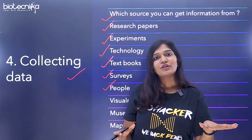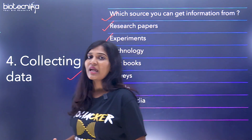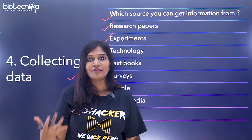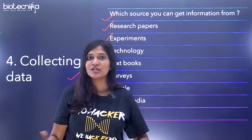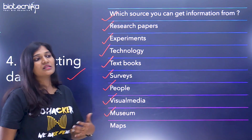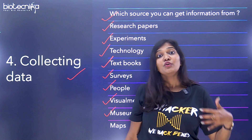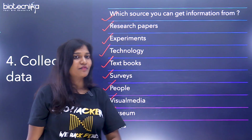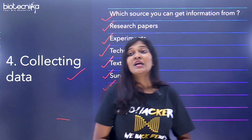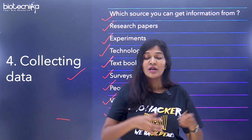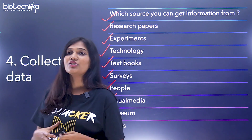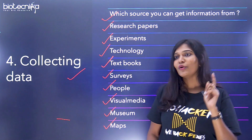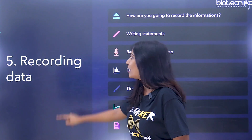If a specific problem exists in India or abroad and surveys are available, you can use them; if not, you can start your own experiments. You can also get information from visual media — researchers and scientists talking at conferences, webinars, or videos. People doing research in plants or animals visit museums to collect information. For plant research, some go to the Himalayas to collect data. Even maps can be a source. The fourth checklist item is collecting data.